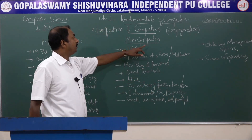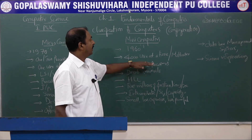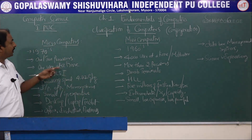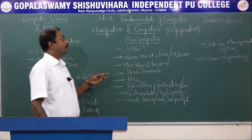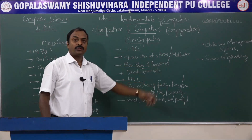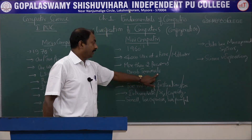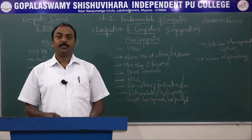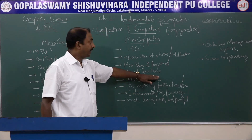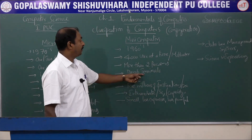Minicomputers originated around the 1960s and are a multi-user device, supporting up to 4,000 users at a time. These users work with dumb terminals — keyboards and monitors connected to a centralized system. Minicomputers have more than two processors depending on configuration, compared to only one or two in microcomputers. They use high-level programming languages.